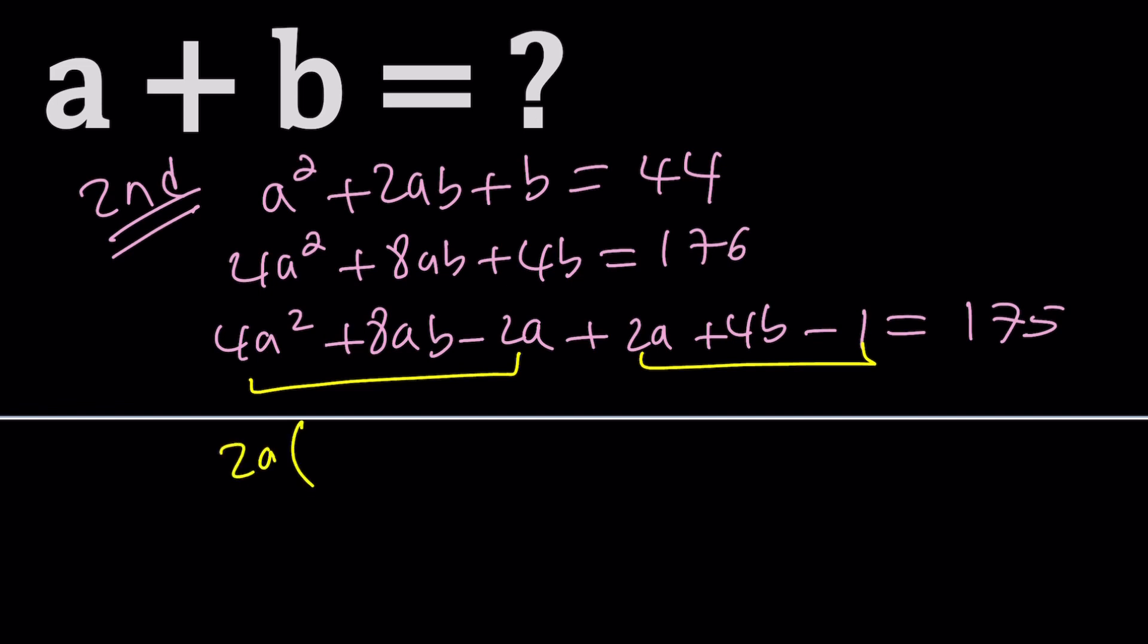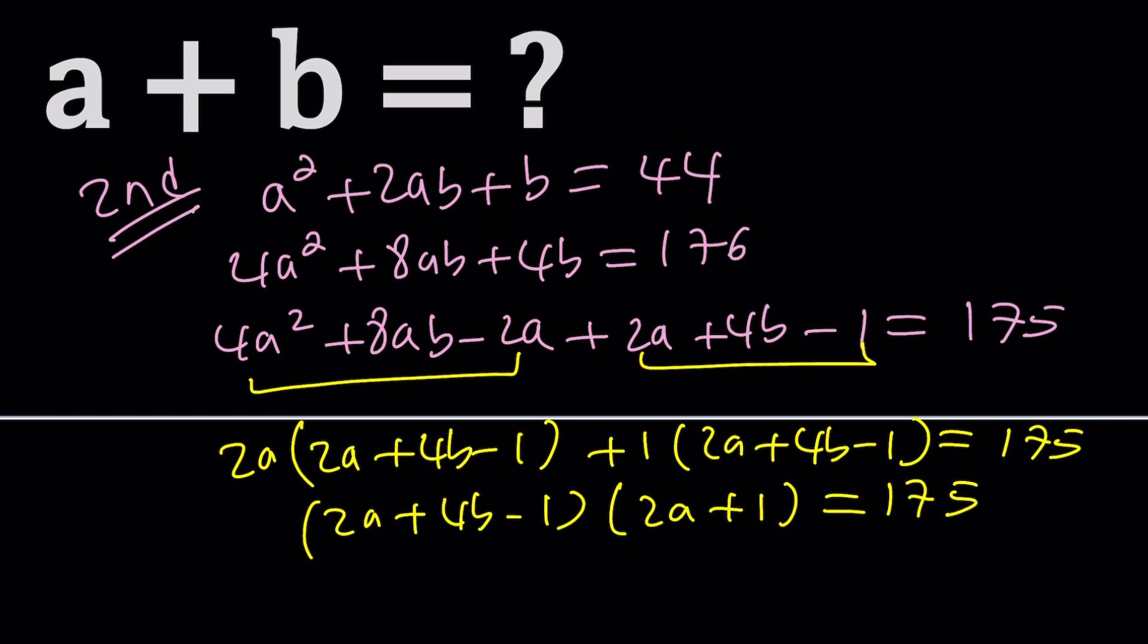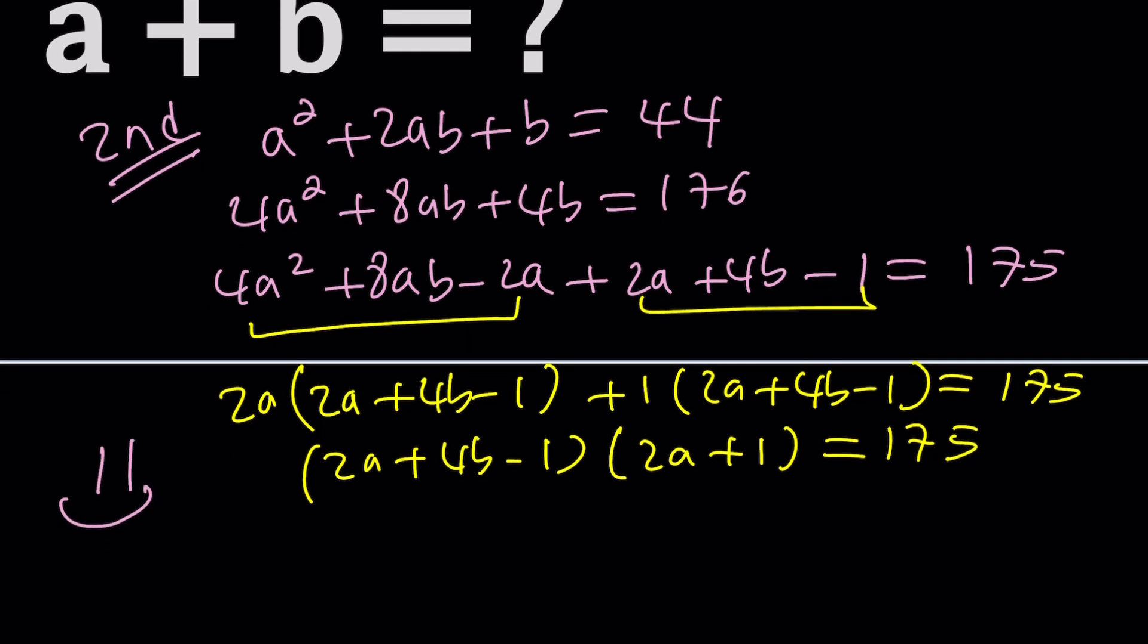So here, notice that 2a is a common factor. And then we get 2a(2a + 4b - 1), and then 1(2a + 4b - 1). Again, this was a really nice strategy to get a common factor. But it's really, really hard to see. But guess what? These kinds of problems appear on math competitions all the time, Olympiads. You need to be able to see these things. In other words, you need to have an eye for these things.